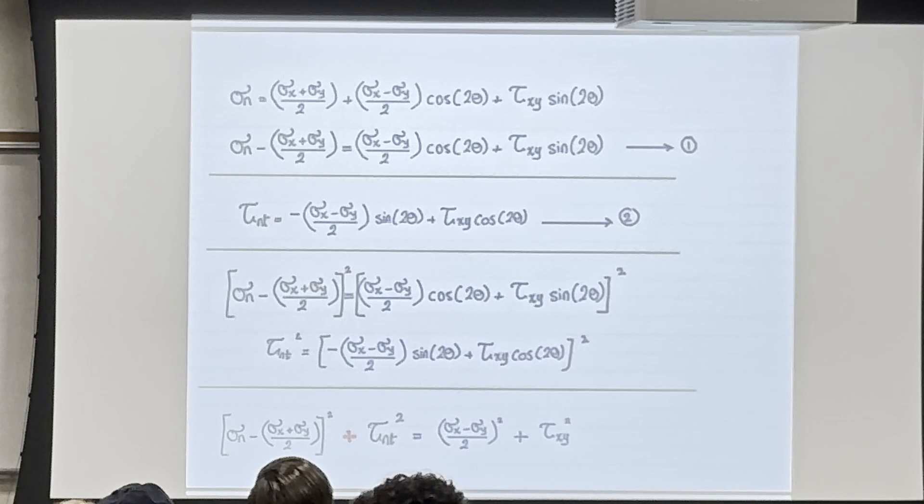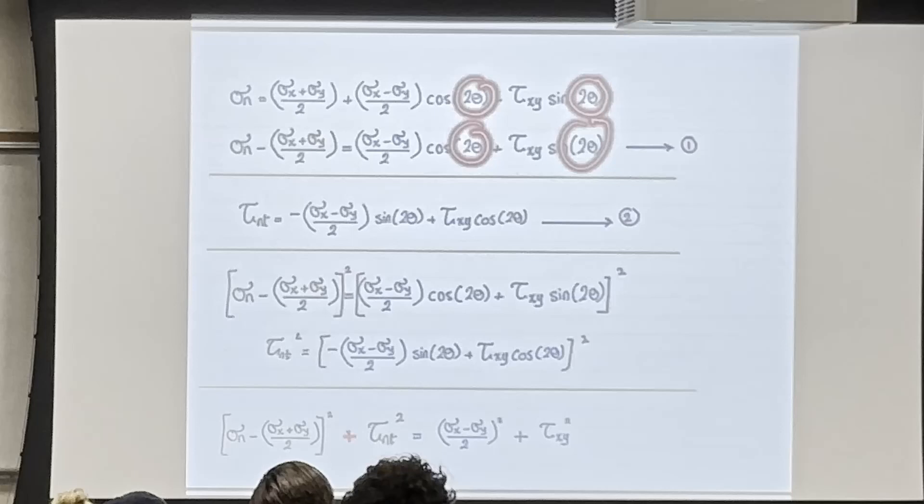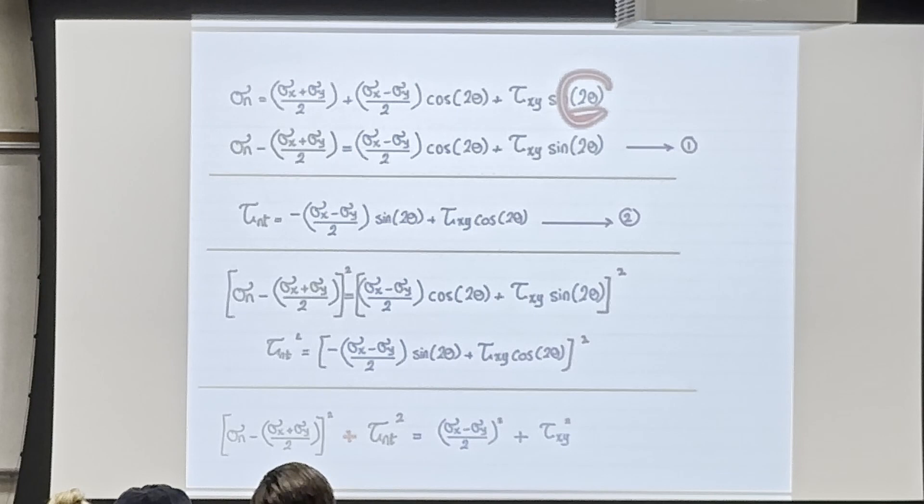So when we draw Mohr's Circle later, every theta in the circle is in terms of 2θ. If I rotated by theta in real life, in Mohr's Circle that's 2θ.